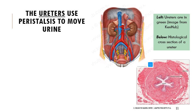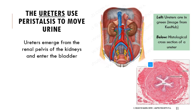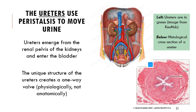The ureters are very important for transporting material from the kidneys to the bladder. There are two, one corresponding with each kidney. They emerge from the renal pelvis and enter the bladder. Unlike blood vessels, which have anatomical valves, the ureters actually form a physiological valve — based on flow of material and general pressure and physical forces rather than an actual anatomical valve.